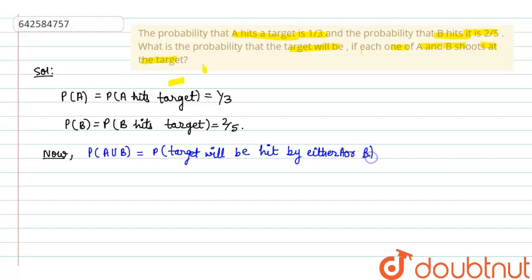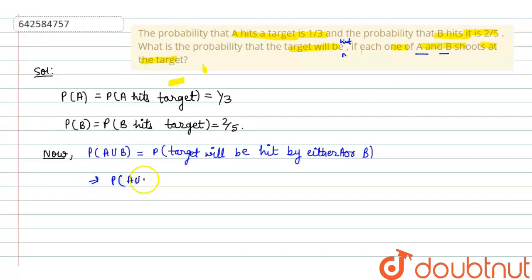Anyone can hit the target, because according to the question, what is the probability that the target will be hit if each one of A and B shoots at the target? So we will apply the formula here to solve this question, which is: P(A∪B) = P(A) + P(B) − P(A∩B).